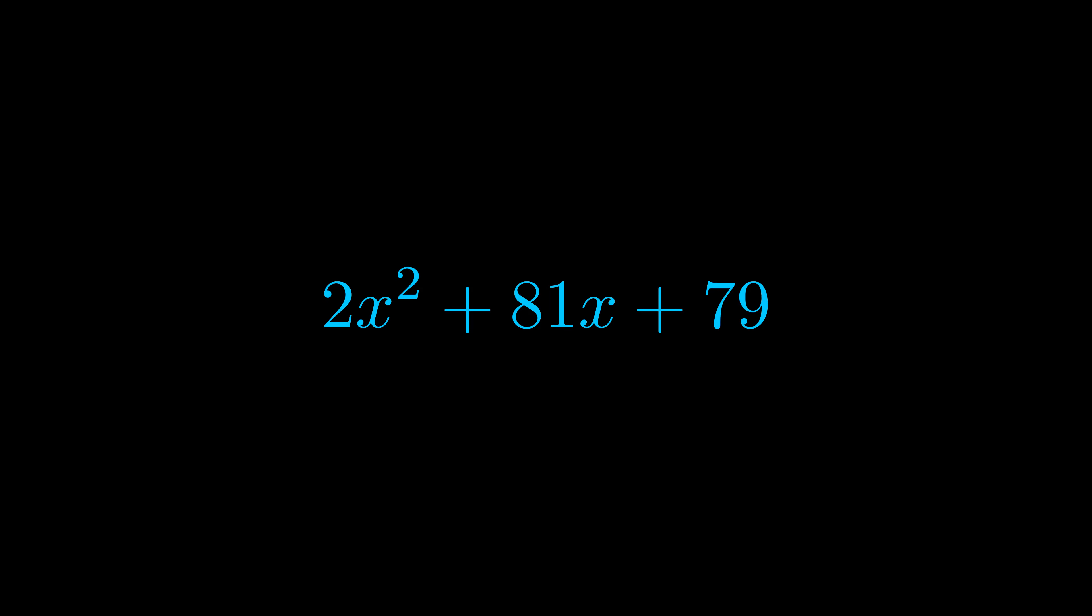Here we can see that our a value is the coefficient on the x squared term and our c value is the constant term. When we multiply these two values we get this value here in magenta.